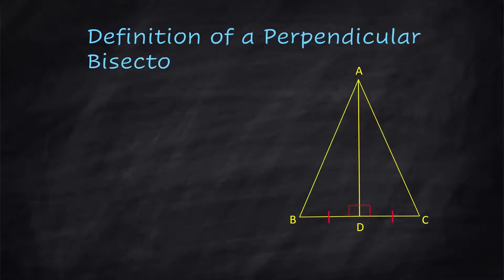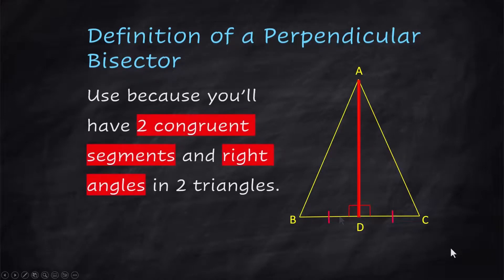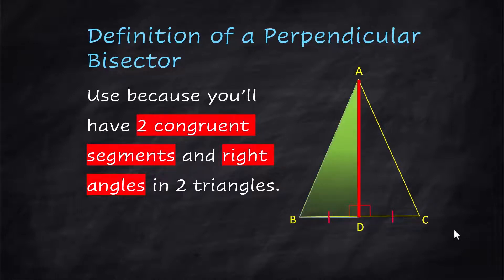Definition of a perpendicular bisector. AD is a perpendicular bisector. You will need to be given that information. But when you are given that information, you have two congruent segments because they're sharing this side and you have two right angles on either side of that bisector. And there's one of the triangles and there's the other triangle.